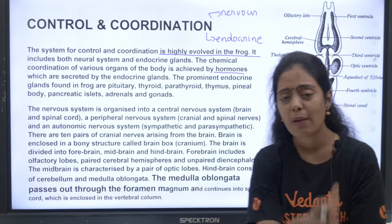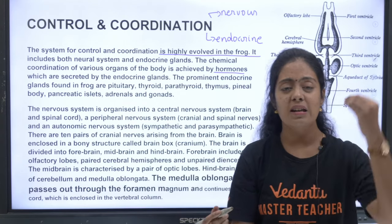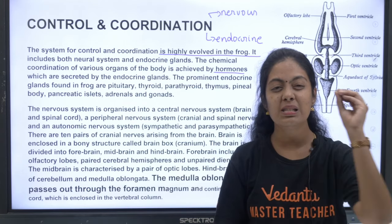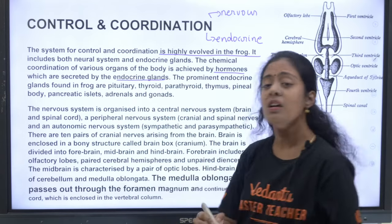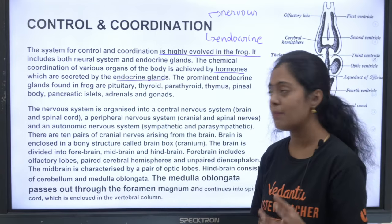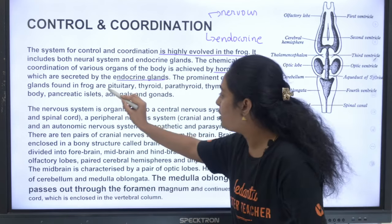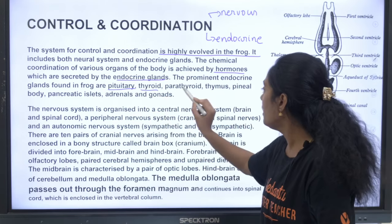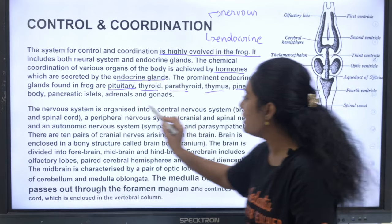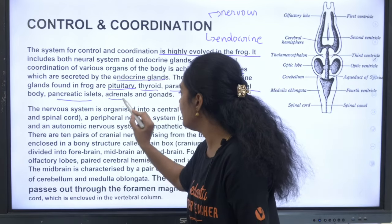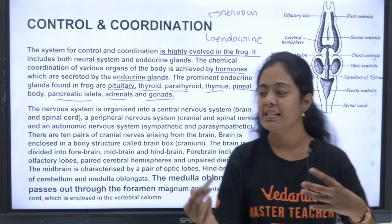Chemical coordination is achieved by hormones — non-nutrient chemicals produced in trace amounts by endocrine glands. The prominent endocrine glands in frogs are pituitary, thyroid, parathyroid, thymus, pineal, pancreatic islets, adrenal, and gonads (ovaries and testes).